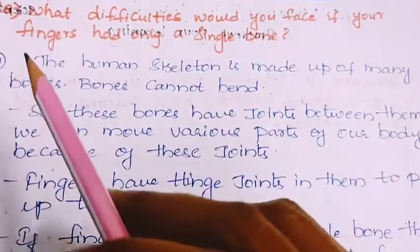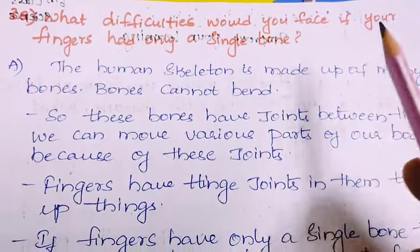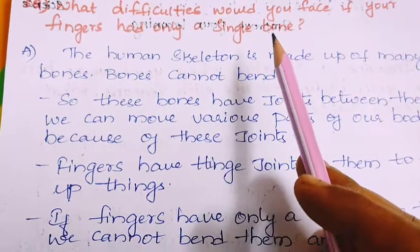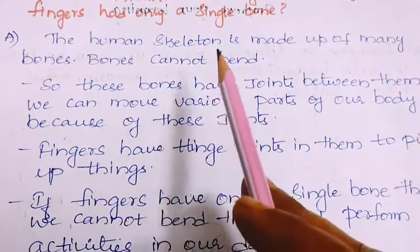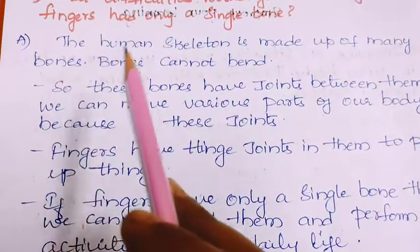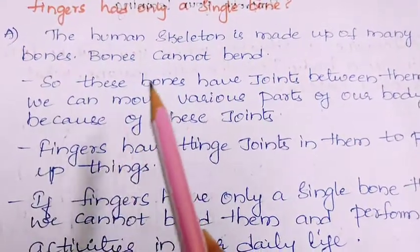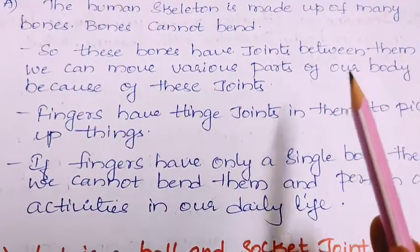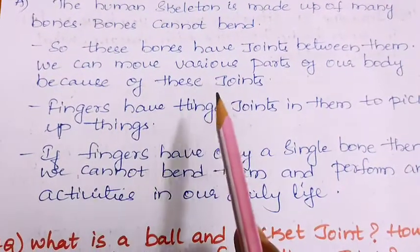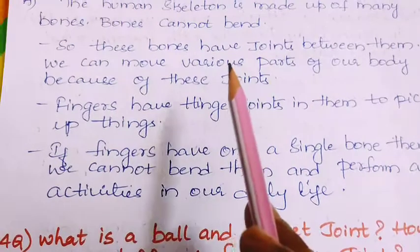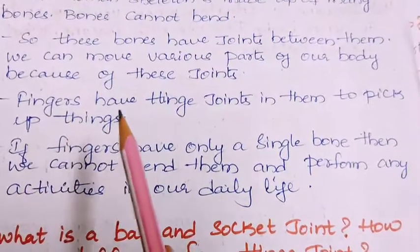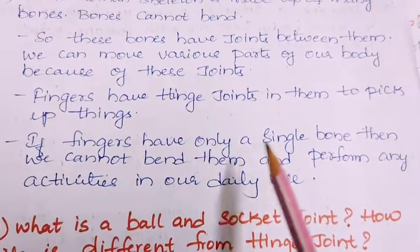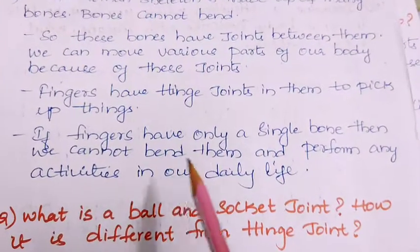Third question: what difficulties would you face if your fingers had only a single bone? The human skeleton is made up of many bones. Bones cannot bend, so they have joints between them. We can move various parts of our body because of these joints. Fingers have hinge joints in them to pick up things. If fingers had only a single bone, we cannot bend them and perform any activities in our daily life.